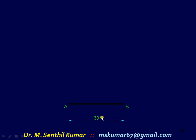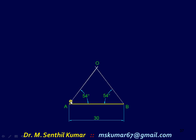Next step: draw 54-degree lines through A and through B. Through A, draw a 54-degree line this way; through B, draw a 54-degree line this way. Thereby you get the intersection point O.